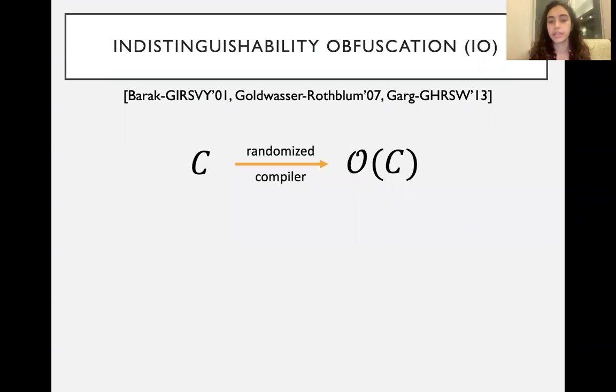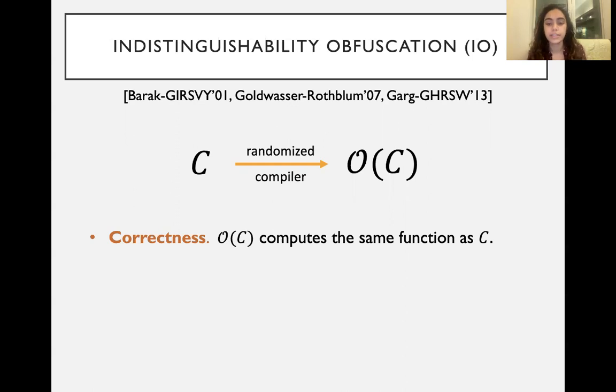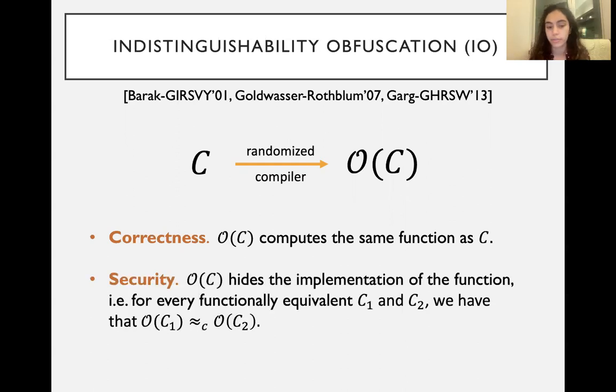Let's start by talking about indistinguishability obfuscation. We generally think of an indistinguishability obfuscation scheme as some randomized compiler that takes a circuit C and computes an obfuscation of that circuit. There's two properties that we want from this scheme. First being correctness - we want that the obfuscated circuit will compute the same function as C, basically so that we can use it in the same way that we would use circuit C, just without leaking any information, which is the second property. We want security, which means that the obfuscated circuit should hide everything about the implementation of the function. This means that if we have two functionally equivalent circuits C1 and C2, which basically means that they have the same truth table, then we should have that the obfuscation of C1 is computationally indistinguishable from the obfuscation of C2.